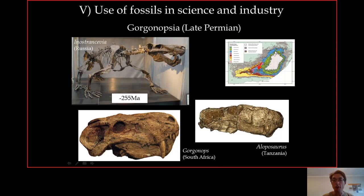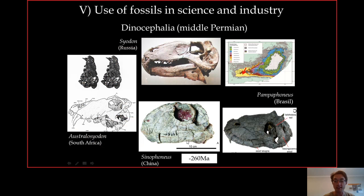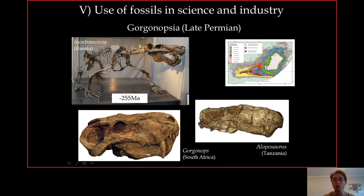In the blue area, which is a little younger because it sits on top of the light orange, you find the gorgonopsians from the late Permian: Alopesaurus from Tanzania, Gorgonops from South Africa, and Inostrancevia from Russia. In Russia, radiometric dating gave an absolute date of 255 million years old. Because you find the same kind of species in Tanzania and South Africa, you can safely say the blue area is 255 million years old — consistent with the previous date of 260 million years, since these rocks are younger and sit on top.